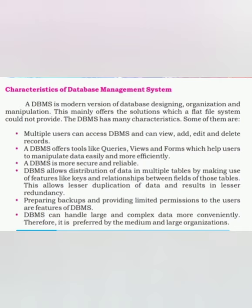یہ تو ہو گیا difference کہ database management system کیا ہوتا ہے اور flat file system کیا ہوتا ہے۔ اب دیکھتے ہیں کہ database management system کے characteristics کیا ہوتے ہیں۔ Database system ایک improved version ہے collecting of data کا، جس میں آپ کسی بھی data کی arrangement کو manage کرتے ہیں، design کرتے ہیں، اسے organize کرتے ہیں تاکہ آپ اسے manipulate کر سکیں اپنی need اور requirement کے حساب سے، اور یہی وہ points ہیں جو اسے flat file system سے comparatively different اور more usable بناتے ہیں۔